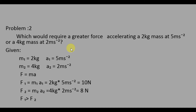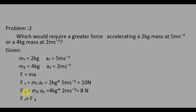Here there are two objects. Which one would require a greater force? Write the given values: for object 1, M1 = 2 kg, acceleration A1 = 5 m/s². For object 2, M2 = 4 kg, A2 = 2 m/s². The equation is F = MA. Substitute the values: F1 = M1 × A1, so F1 = 10 N. For object 2, F2 = M2 × A2, so F2 = 8 N.